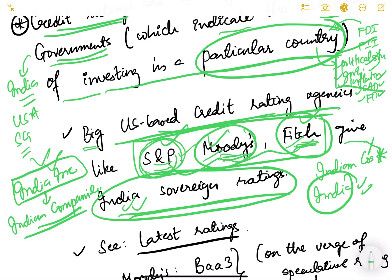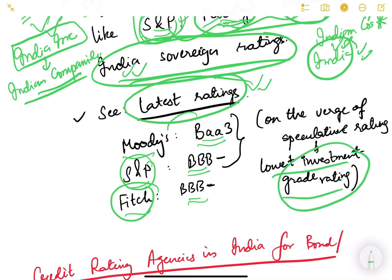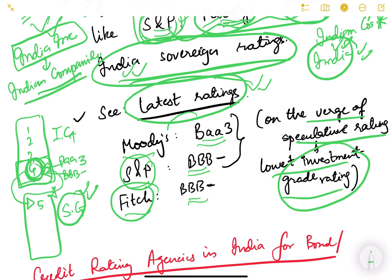These agencies rate India as a country in terms of how secure it is to invest here. As of 2022, Moody's has given India a Baa3 rating, S&P has given BBB minus, and Fitch has also given BBB minus. These ratings are basically the lowest of the investment grade — they fall at the fourth position in an eight-tier scale. India is just on the verge of slipping into speculative grade, so we need to move up on the rating scale.